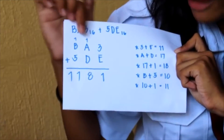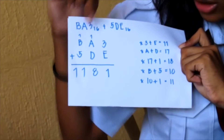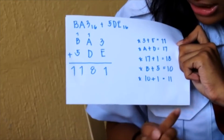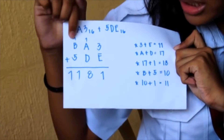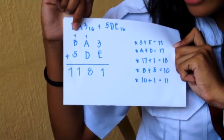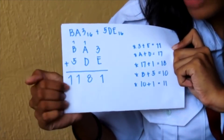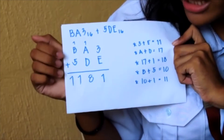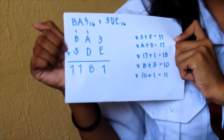Afterwards, you add B and 5, which results in 10. Since there is a carry, you add that as well, resulting in 11, giving you a final answer of 1181 base 16.